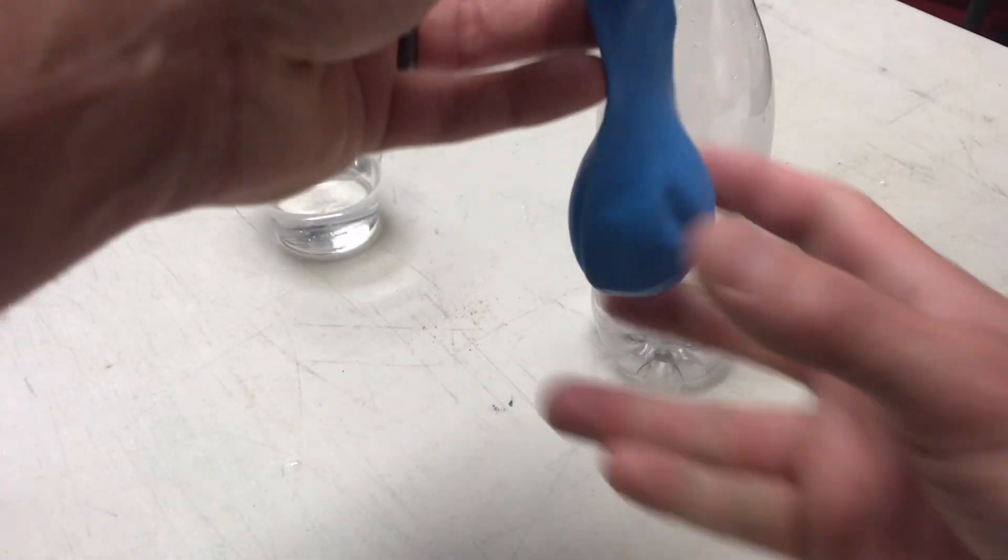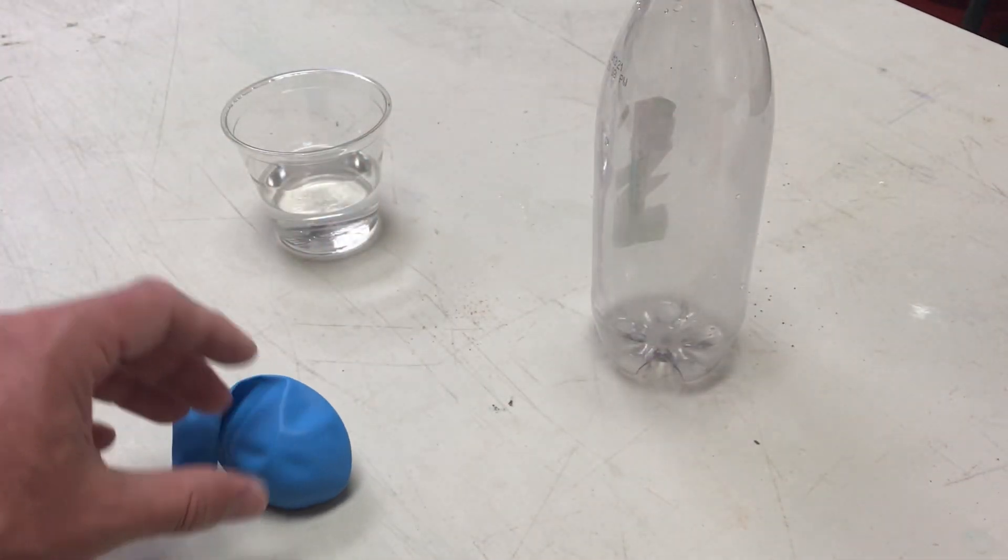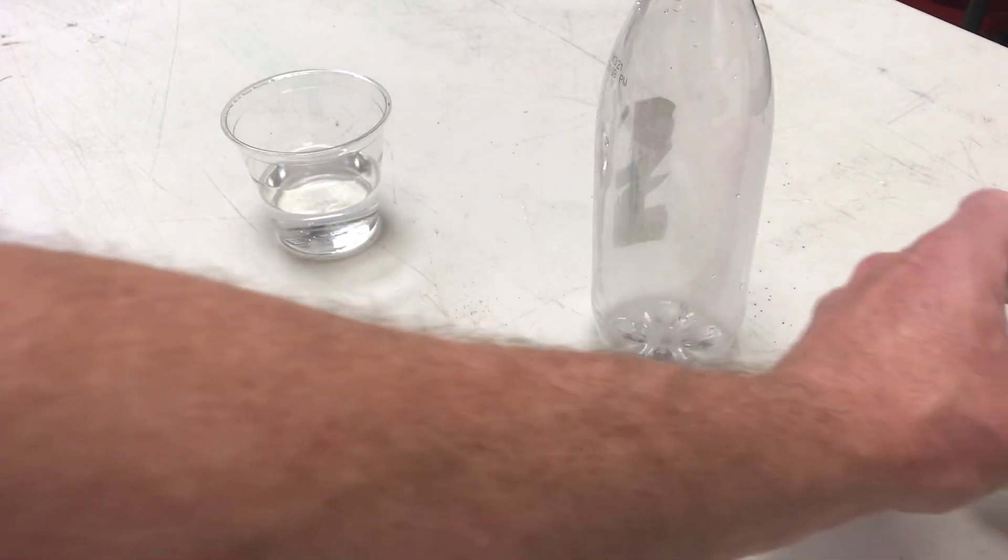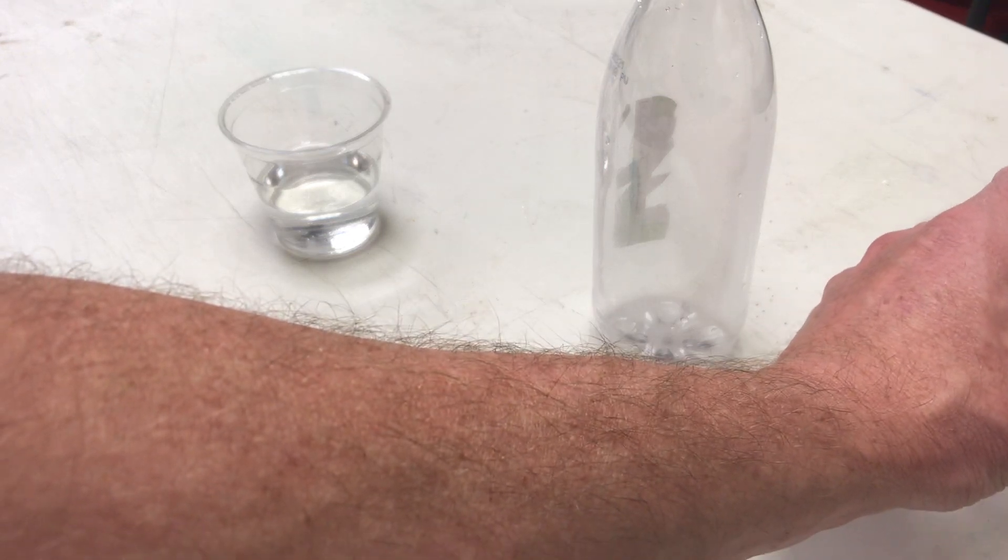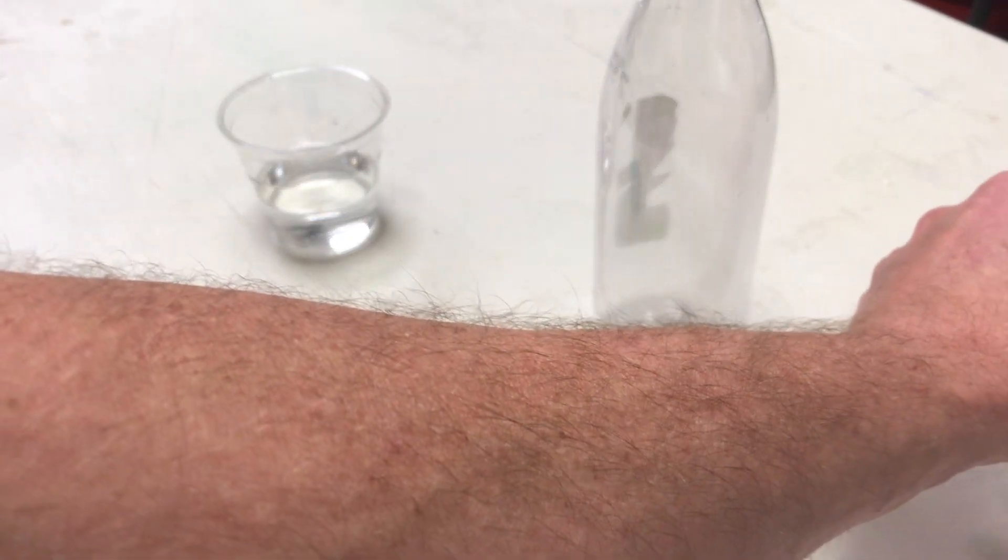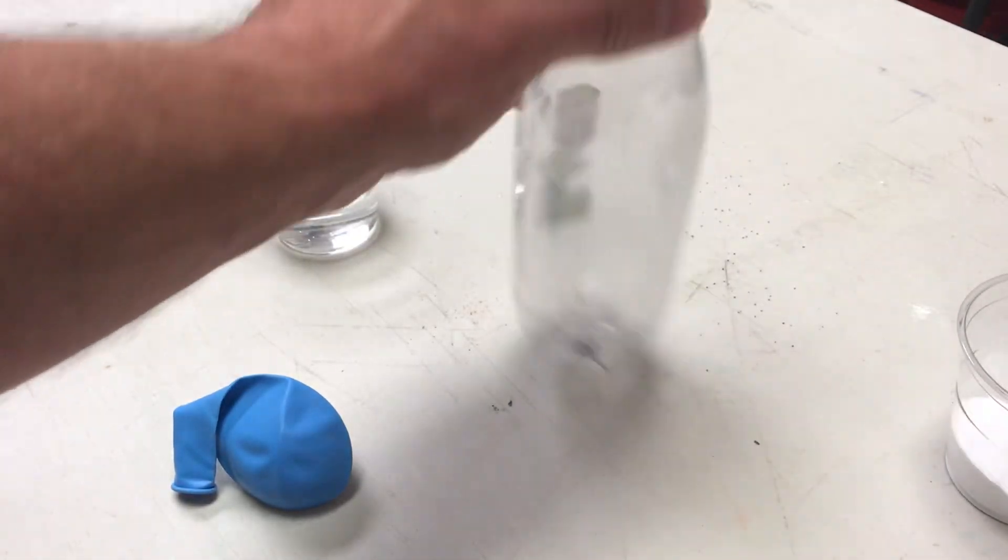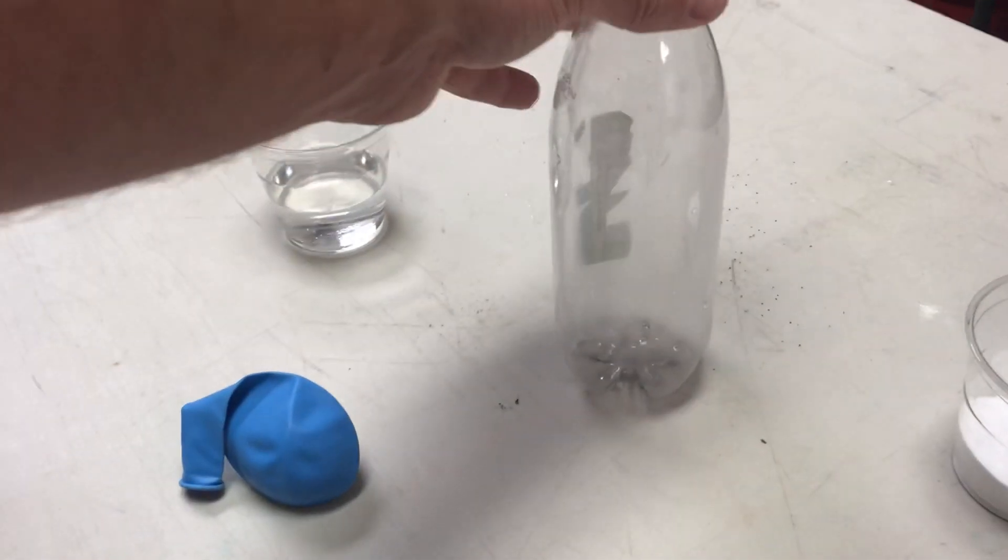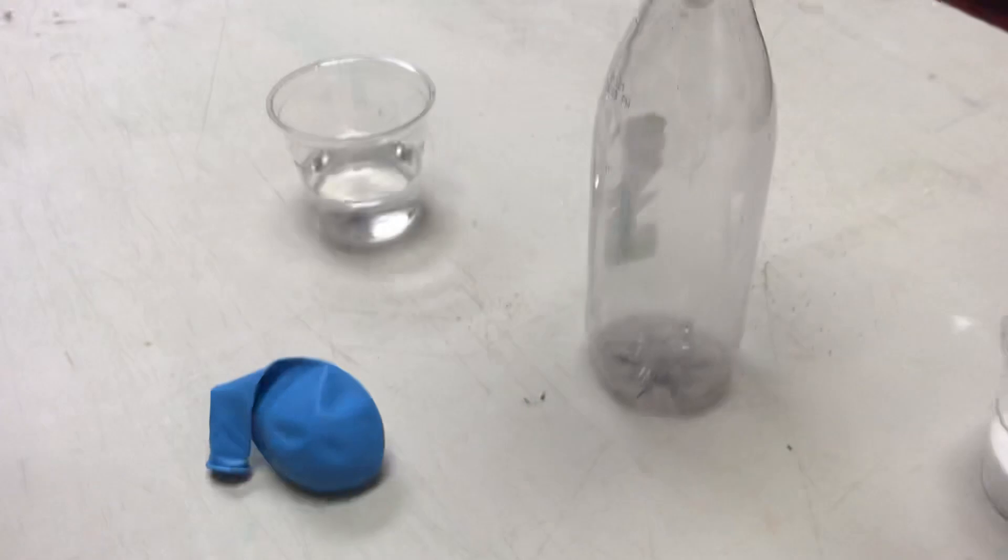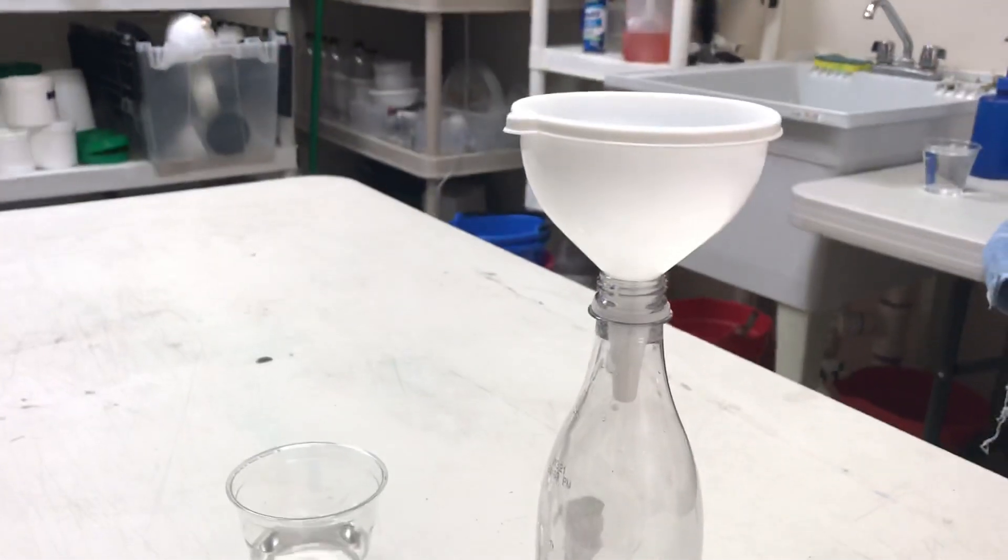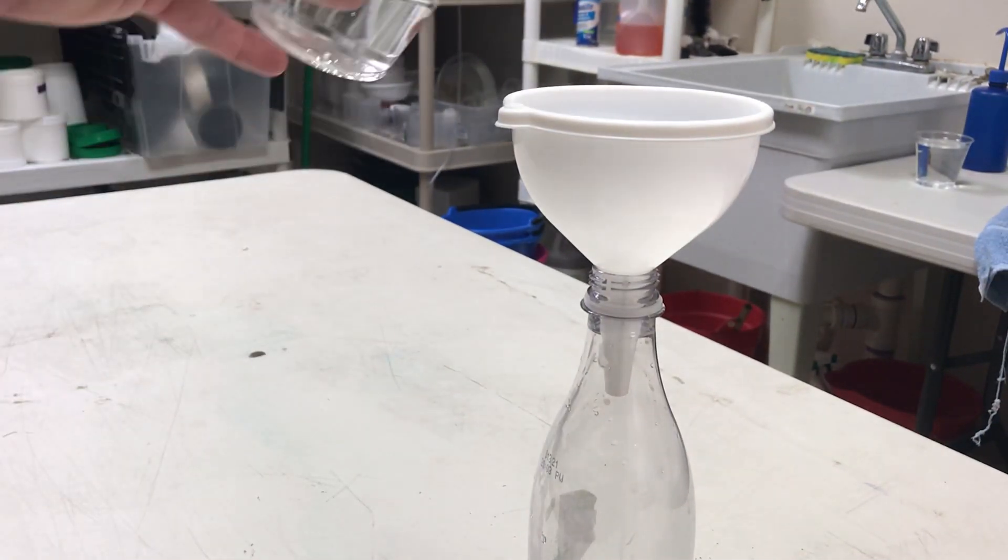That should work, I'm guessing that's about a tablespoon. Then get all this baking soda out of our funnel here. I'm going to put my funnel in my bottle, it's a little hard to see, and add my vinegar to my bottle.